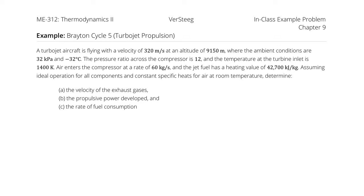Assuming ideal operation for all components and constant specific heats of air at room temperature, determine: A, the velocity of the exhaust gases; B, the propulsive power developed; and C, the rate of fuel consumption.